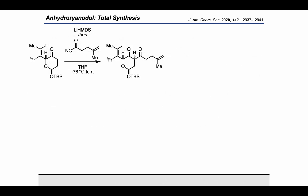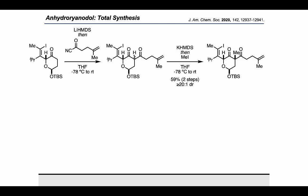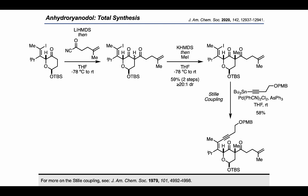Treatment with LiHMDS allowed a kinetic enolization, after which an acyl cyanide could be used to form a 1,3-diketone product. They were then able to use KHMDS and iodomethane to form the methylated product in a highly diastereoselective fashion. At this point they engaged the vinyl iodide in a Stille coupling using a tributyltin-bearing alkyne as a coupling partner, setting up the key 1,3-dicarbonyl motif bearing a pendant alkyne ready for annulation.